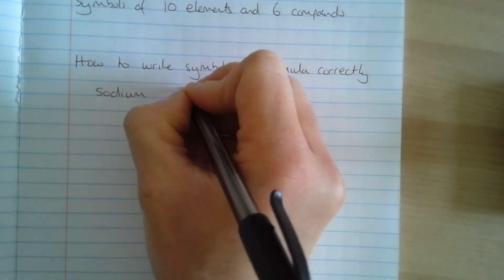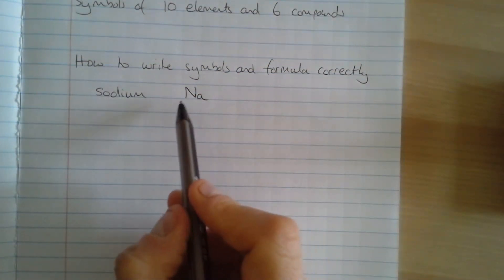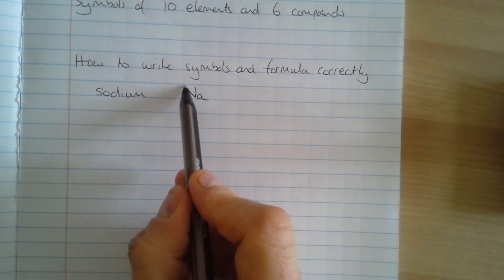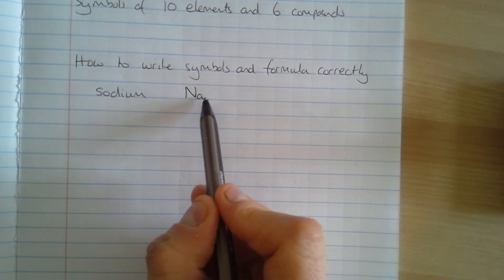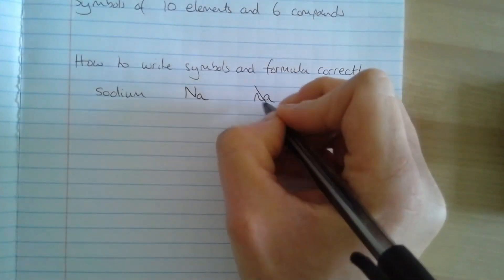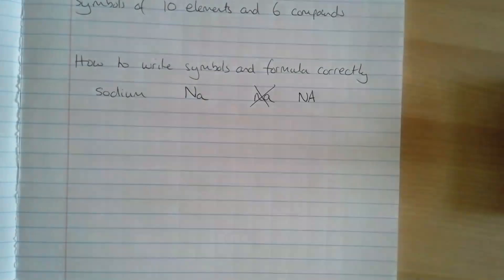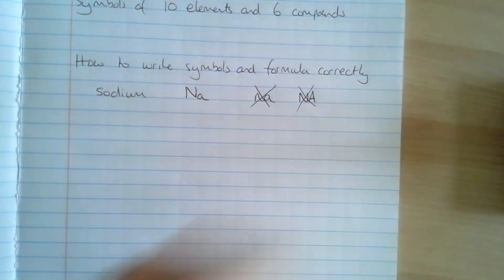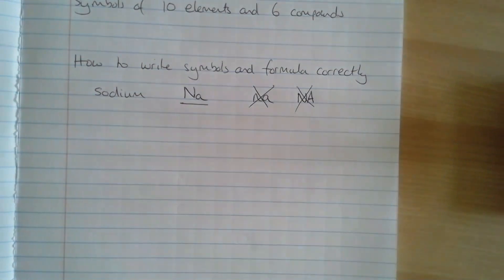Sodium has the symbol Na, it's a two letter symbol. If an element has a two letter symbol, it's a capital letter, so a big N followed by a small lowercase letter a. If you were to write both lowercase, that wouldn't be correct. And if you write both capital letters, both big letters, that wouldn't be correct for sodium. It has to be a capital letter and a small letter.